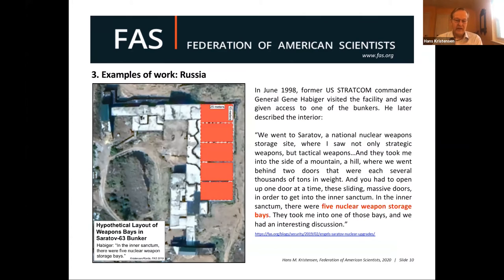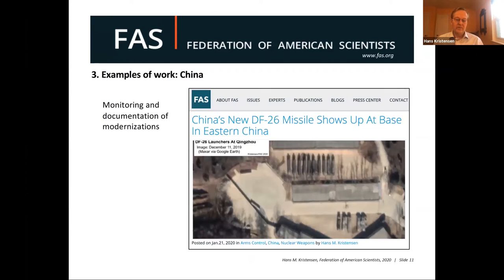We combine satellite imagery and anecdotal evidence — stories people told in the past that turn out to be really interesting. For example, a former STRATCOM commander visited a Russian central nuclear weapon storage site and afterward described it publicly — the intelligence community apparently wasn't very happy about that — but he described the structure, and we have satellite imagery of what's going on at that storage site now as it's being excavated and upgraded. On the Chinese side, monitoring where systems go in China is hugely interesting because it used to be a very opaque dark spot where information was very hard to get unless someone leaked something. Since Google Earth came about, it's been extraordinary. There are many really good people today combing these areas to look for systems and developments.